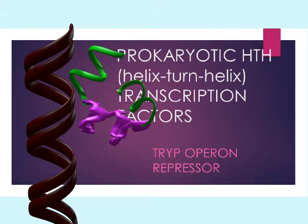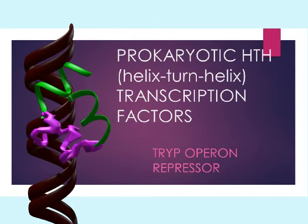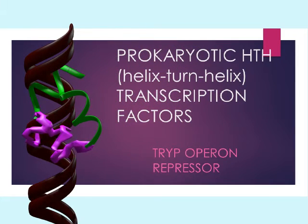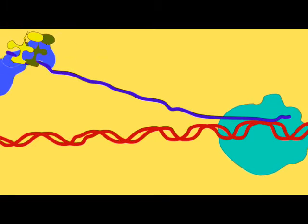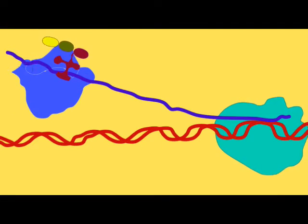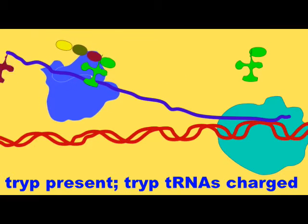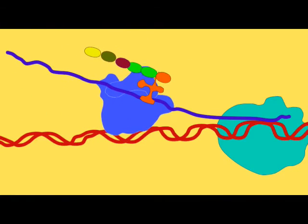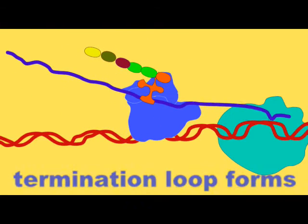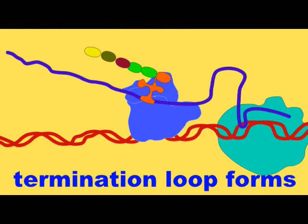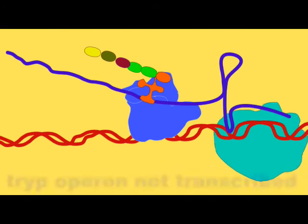The repressor for the tryptophan operon in bacteria is also an HTH protein. This operon controls the genes important for tryptophan metabolism, including the gene for the repressor itself.